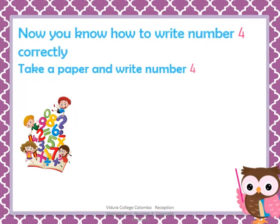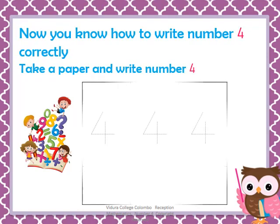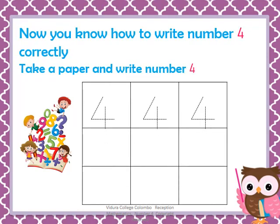Now I am sure you know how to write number 4 correctly. Children, take a paper and write number 4. As I taught you all, first you have to write the slant line. Then, sleeping line. Finally, standing line.